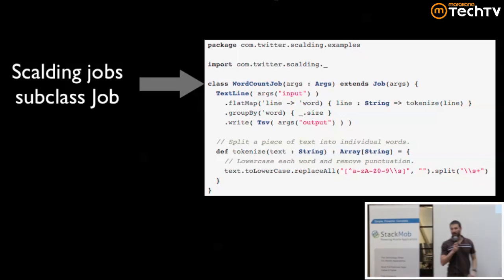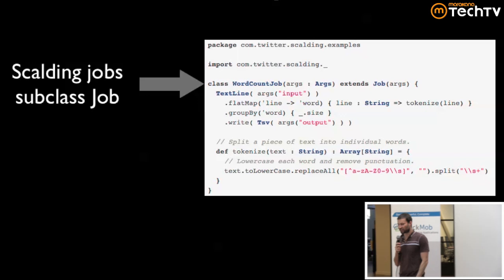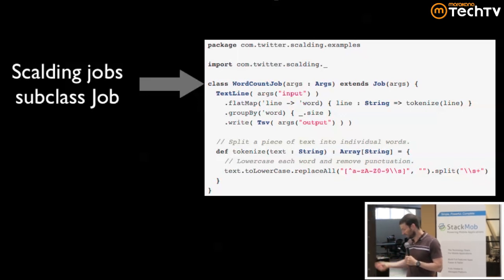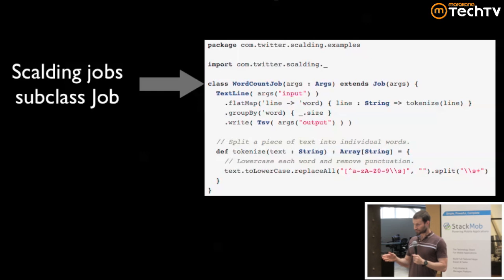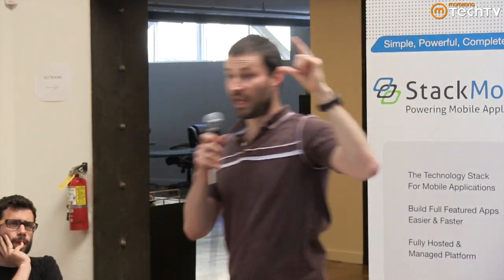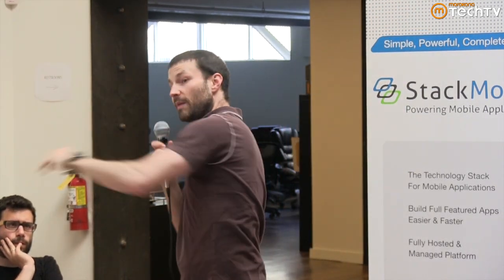Now there's a function called `groupBy`. In Scala it takes a function that maps an item onto a key. A simple way to think about it: I'm going to sort all the men and women in this room, and the sorting function returns either M or F. You get a mapping with M and a list of all the men, and F and a list of all the women. That's how MapReduce works.